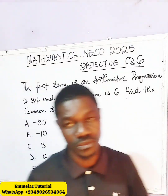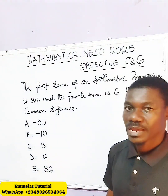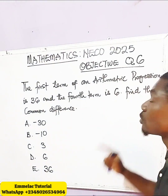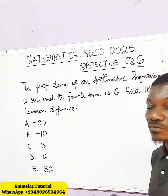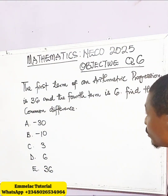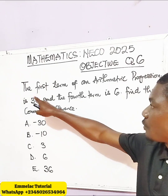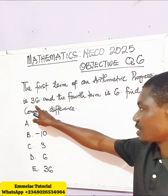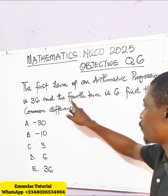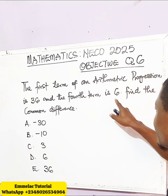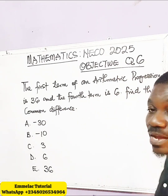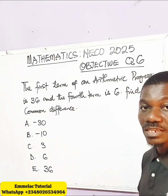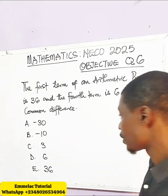Welcome to MelaConline Tutorial. Here is number 6 of NERCO 2025 objective question. The first term of an arithmetic progression is 36 and the fourth term is 6. Find the common difference, and here are the options given.